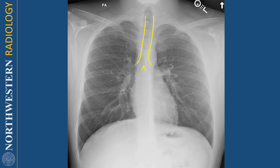Let's start by looking at the trachea. The trachea is this lucent tube extending from the top of the radiograph in the lower neck to the carina. The carina is this triangular shaped structure that divides the trachea into the right and left main stem bronchi. There's a normal deviation of the trachea to the right, which is due to the aortic arch, right here.